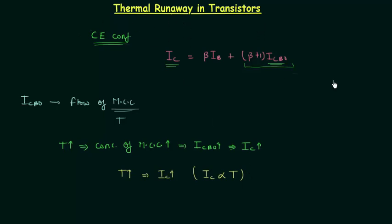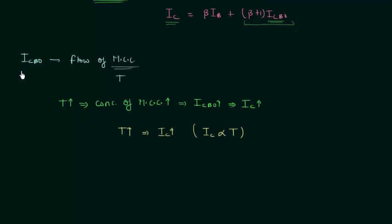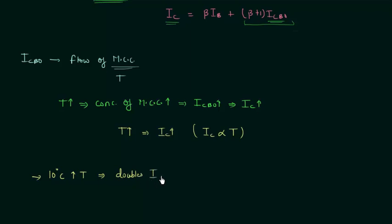The next point is the dependence of ICBO on temperature. ICBO is a very strong function of temperature — with every 10 degree rise in temperature, ICBO doubles. So a 10 degree rise in temperature doubles the reverse saturation current ICBO, and because of this the collector current will also change, since IC equals beta times IB plus beta plus 1 times ICBO.